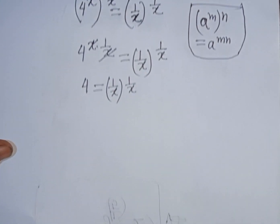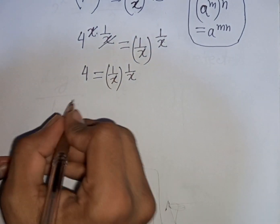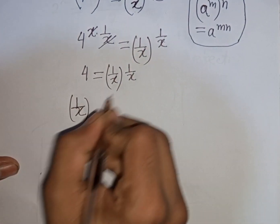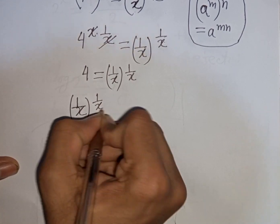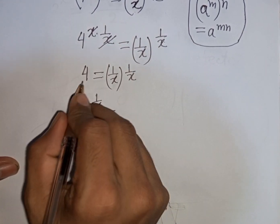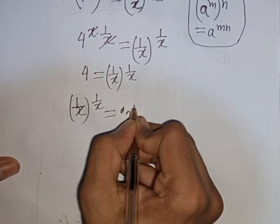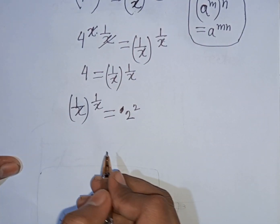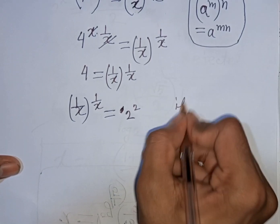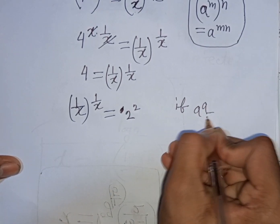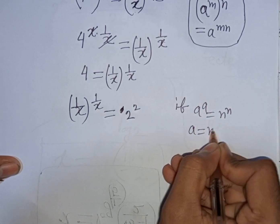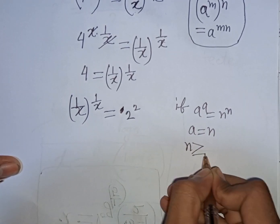Now you can write here (1/x)^(1/x) = 4, can be written as 2^2. Now here I can apply a rule that if a^a = n^n, so a will be equal to n, where n is greater than or equal to 1.